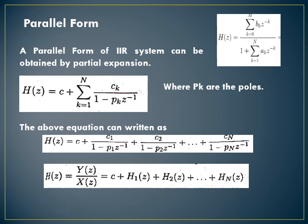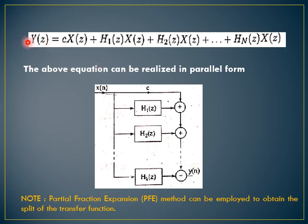Parallel form. A parallel form of an IIR system can be obtained by partial fraction expansion. H(z) equals bk representing the zeros and ak representing the poles. This can be written as H(z) = C + summation from k=1 to N of Ck/(1 - pk·z⁻¹), where pk represents the poles. H(z) = Y/X(z) = C + H1(z) + H2(z) and so on. After cross-multiplying, Y(z) = C·X(z) + H1(z)·X(z) + H2(z)·X(z) through HN(z)·X(z).